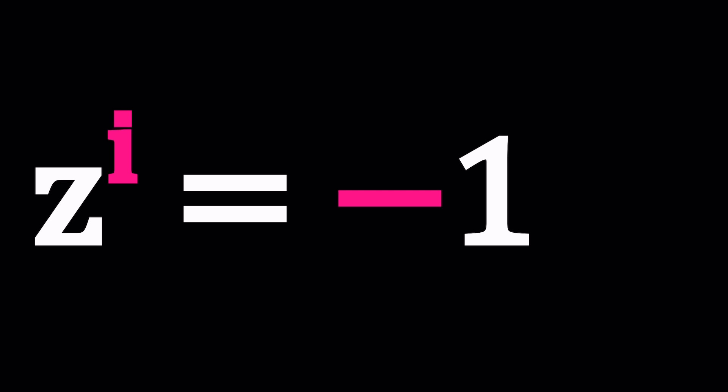We have z to the power i equals negative one and we're going to be solving for z values. z is a complex number, i is a complex number, i is actually an imaginary number. If you don't know what it is, i is the square root of negative one, you can also express it as i squared equals negative one.